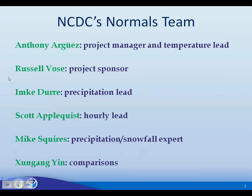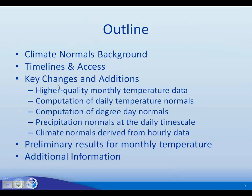This is the normals team here at NCDC. I'm the project manager and also responsible for all of the temperature normals. Our project sponsor is Russell Vose. Our precipitation lead is Emkadura. Applequist is taking the lead on our hourly normals. Mike Squires is helping with precipitation and snowfall normals, and Shunrong Yin is helping with comparisons to the 1971–2000 normals. Please interrupt me at any time if you have any questions.